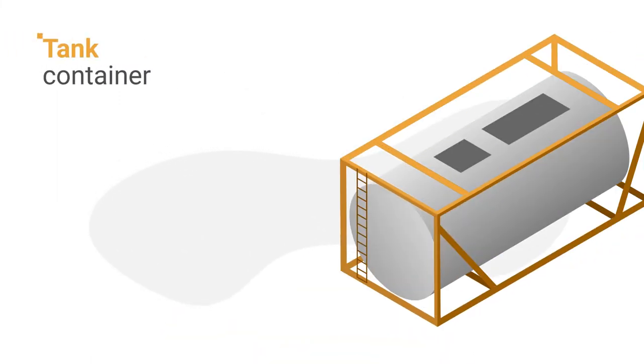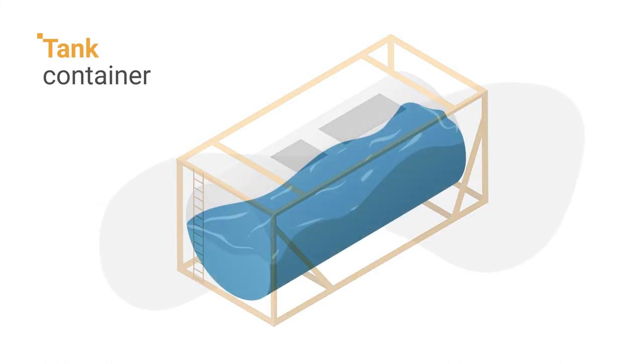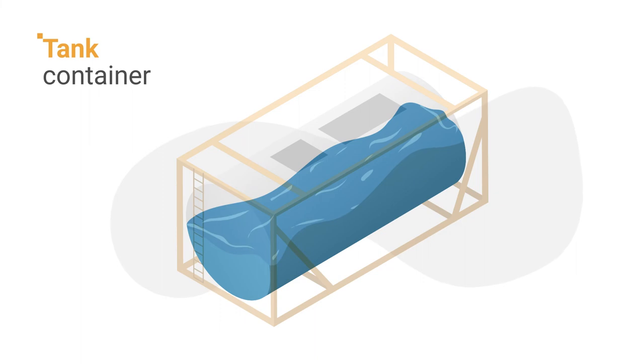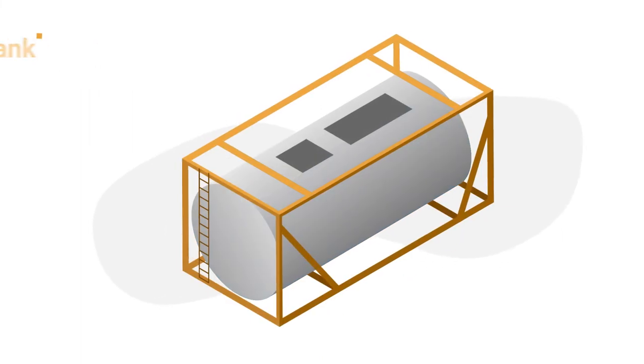9. Tank Container. Tank containers, or tankers, are made to transport liquid. They're made of strong steel and anti-corrosive materials to protect the liquid and keep it from leaking out.